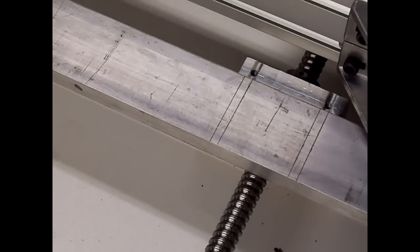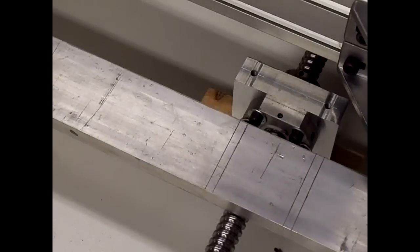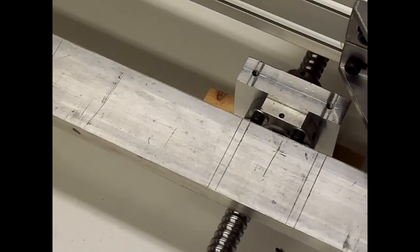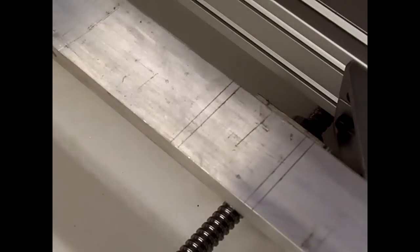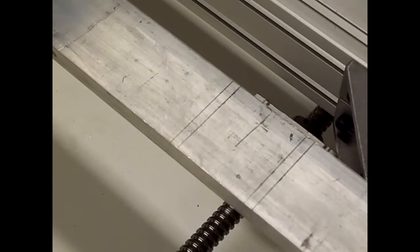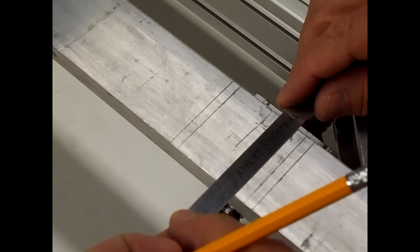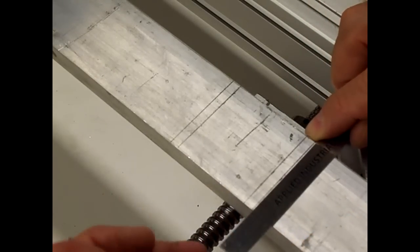Looks like it lines up pretty good, so we'll do the same thing for the other side. Then we'll run down and check the other end. I'm going to go ahead and mark the center across the width of it while I got it down here on this end. The bar is a two-inch bar so we'll just mark one inch from each side.